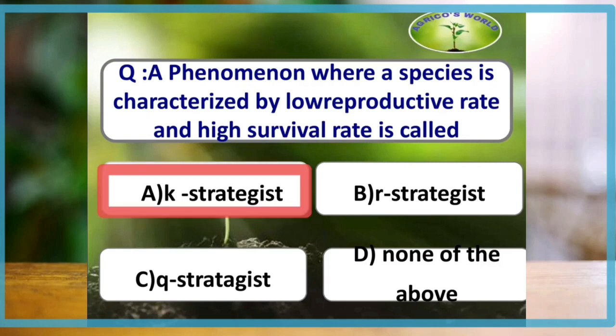A phenomenon where a species is characterized by low reproductive rate and high survival rate is called K-strategist, whereas a phenomenon where a species is characterized by high reproductive rate and low survival rate is called r-strategist.